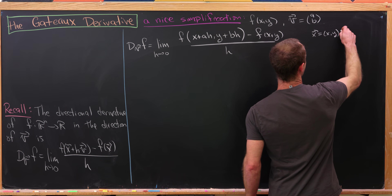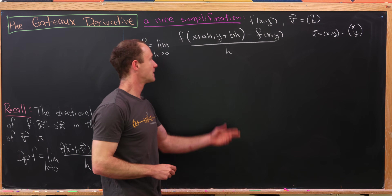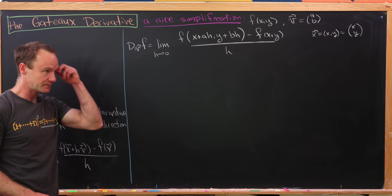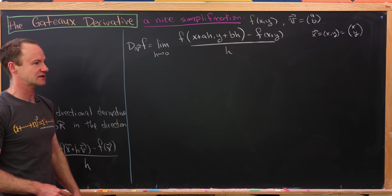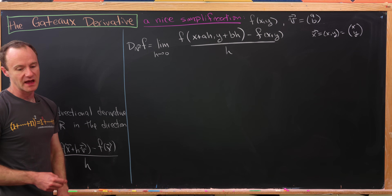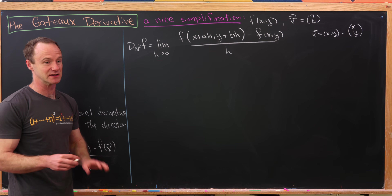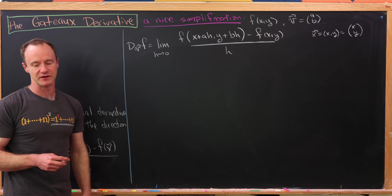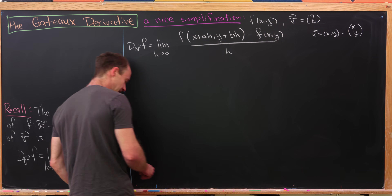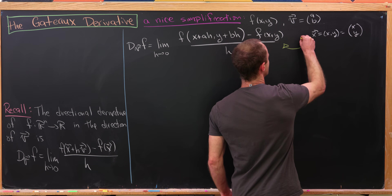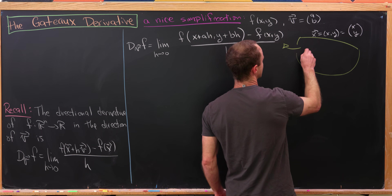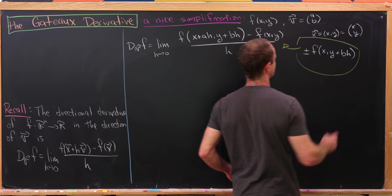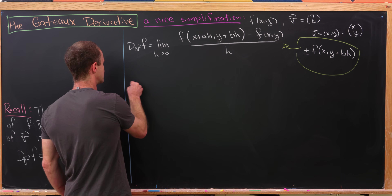From here we'll add and subtract the same thing — in other words, add zero — and simultaneously split this into two limits. This may seem a little cheesy, but we're working in the case where everything is nice, just to give intuition for how the directional derivative works. What we'll add and subtract is f(x, y + bh), giving us the limit as h goes to zero of f(x + ah, y + bh) − f(x, y + bh), all over h.